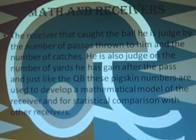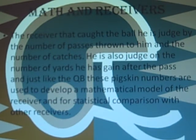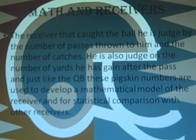Math and Receivers: the receiver that caught the ball is judged by the number of passes thrown to him and the number of catches. He is also judged on the number of yards gained after the pass, and just like the QB, these numbers are used to develop a mathematical model of the receiver for statistical comparison with other receivers.